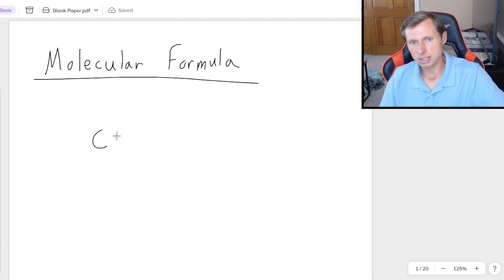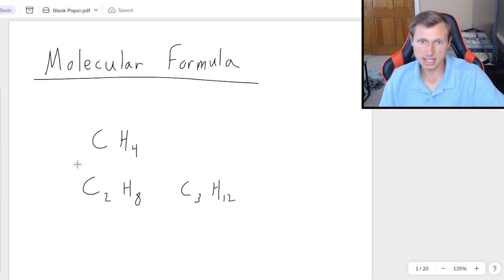So as an example, CH4 is a very common empirical formula in chemistry. However, if I multiply each of these elements by 2, I get C2H8, or if I multiply each of them by 3, I get C3H12. And so even though if I reduce them, I get back to CH4, which again is the empirical formula,